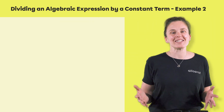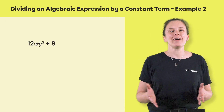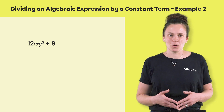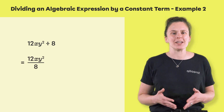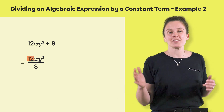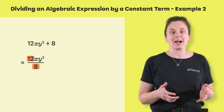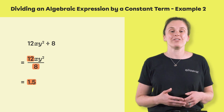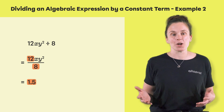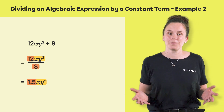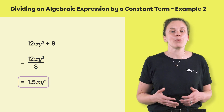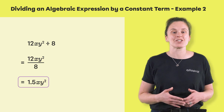Let's look at a second example: 12xy² divided by 8. We could also write 12xy² over 8. To perform the division, we must divide 12 by 8, which equals 1.5. The variables xy² remain the same. Therefore, the simplified form of the division is 1.5xy².